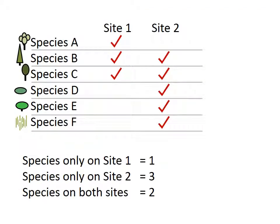We now have enough information to start analyzing the species data. Our goal is to determine the similarity of the two sites. Start by looking at site 1 — how many species were only found at site 1? Only species A was unique to site 1, so the answer is one species. We ask the same question about site 2 and find that three species — D, E, and F — were found only at site 2, so we record a value of 3. Finally, we count the number of species found on both sites: species B and C, giving a value of 2.